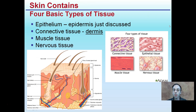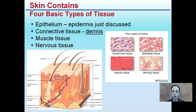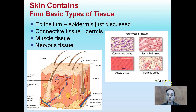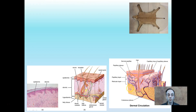Skin contains four basic types of tissues: epithelium, connective tissue (which is part of the dermis), muscle tissue, and nervous tissue. There will be other videos that go through and discuss the muscular system and the nervous system, but for now, just know skin is made of these four basic types of tissue.